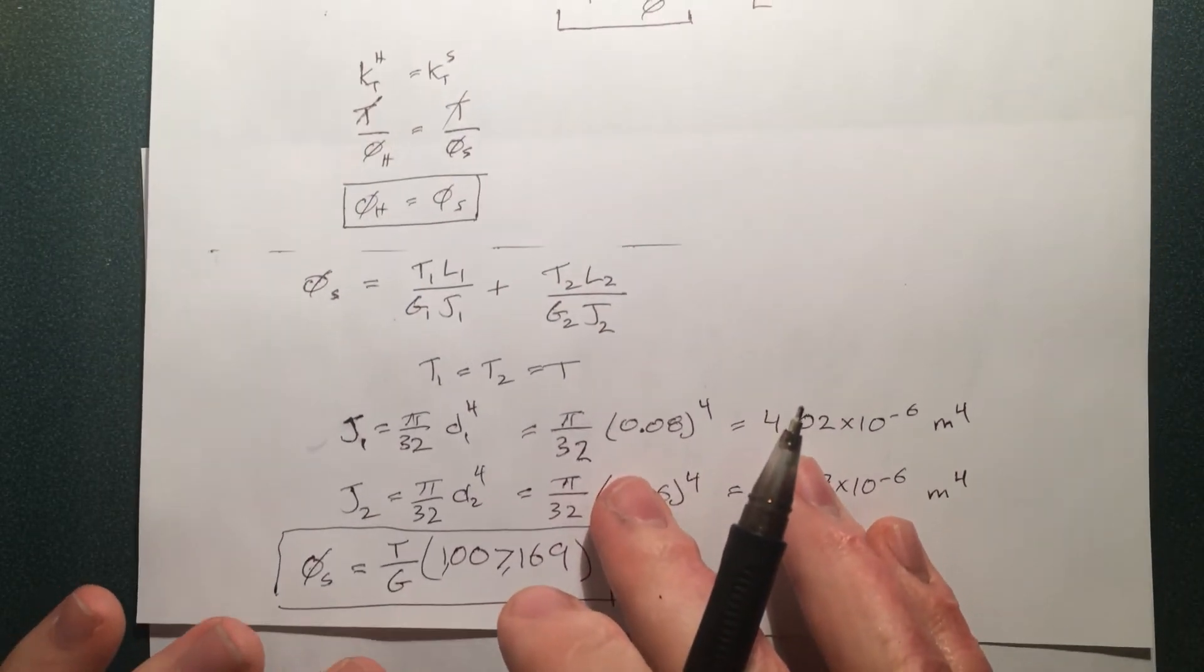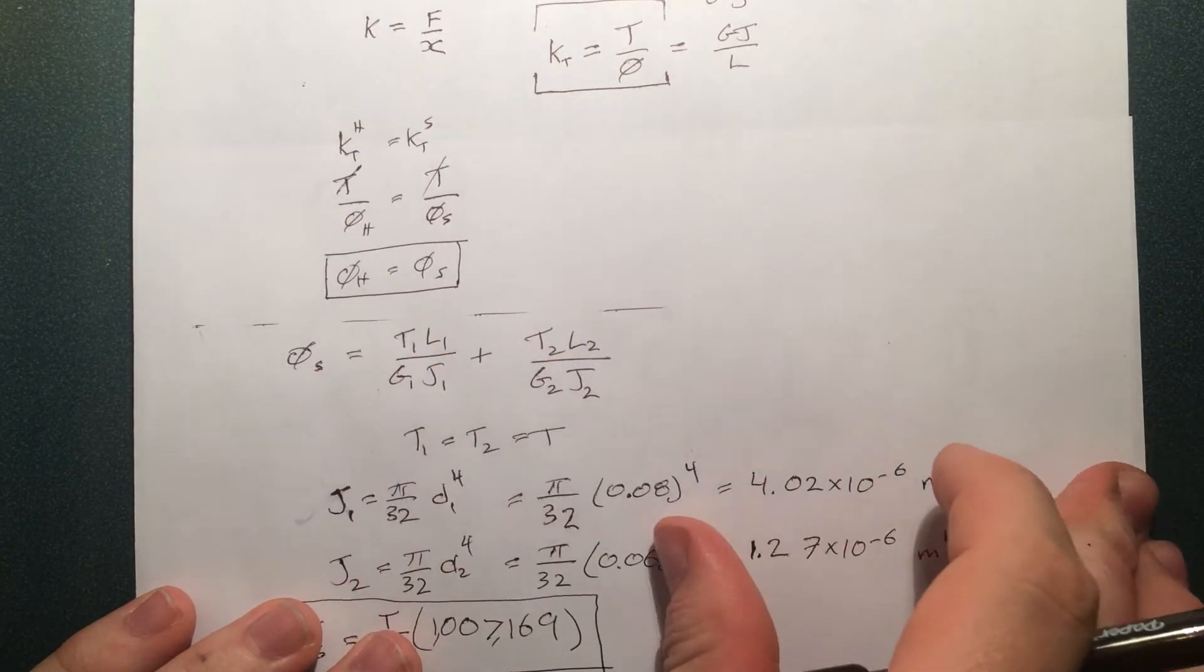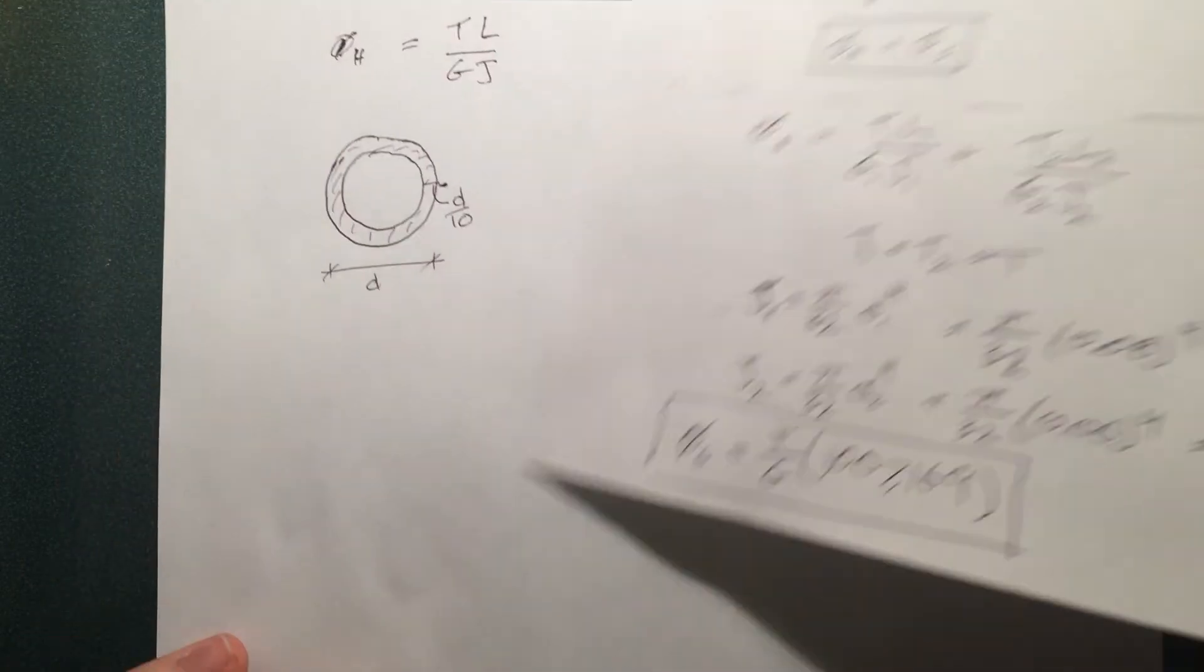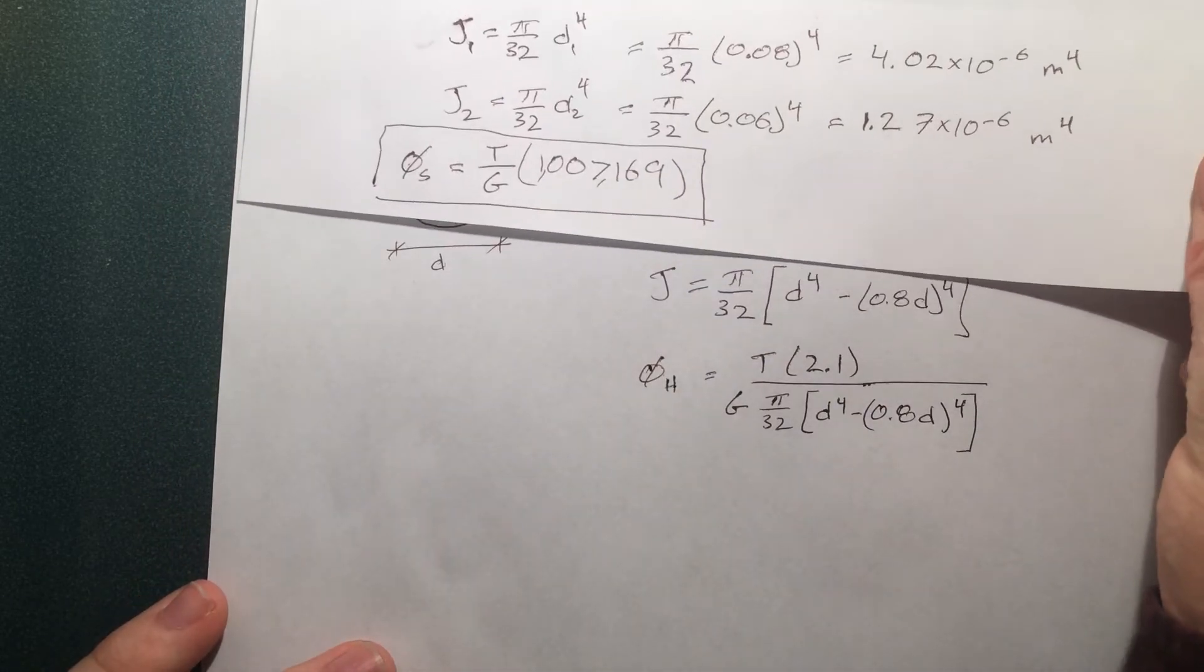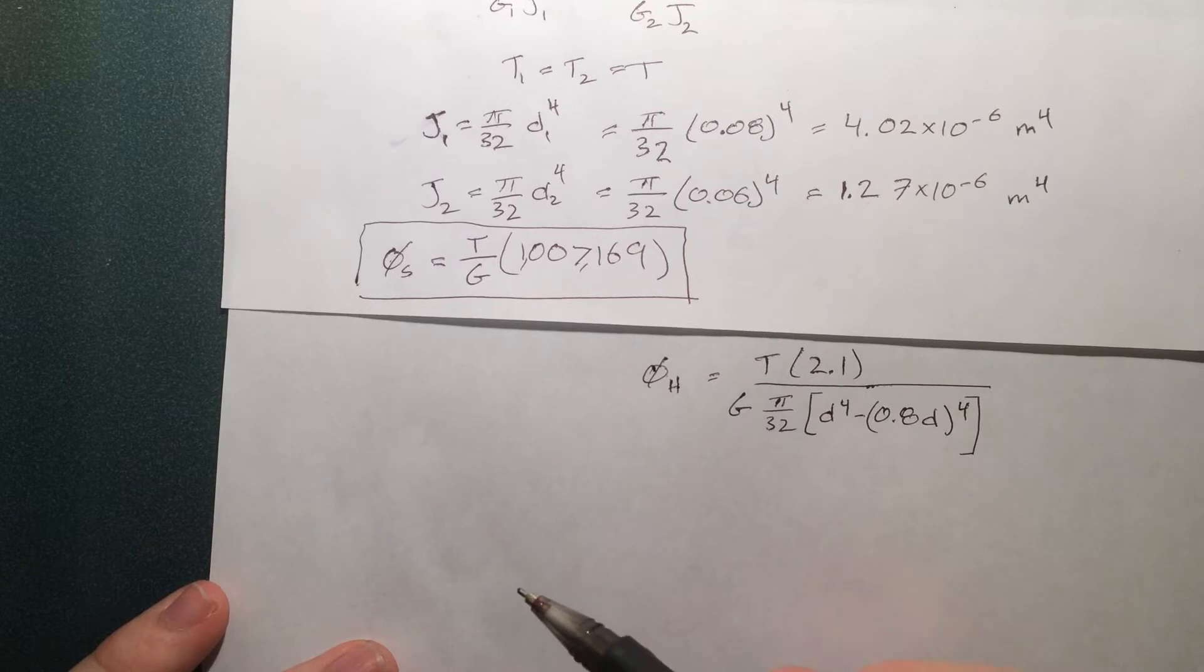There we go now we have an expression for the hollow one expression for the solid one and our torsional stiffness in order for them to be the same we have to let the phi is equal so it's just a matter of letting these two equal each other and solving for D. Let me just keep this up here so basically this equals that.